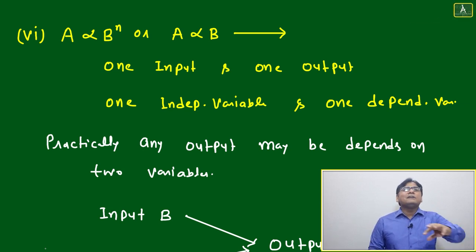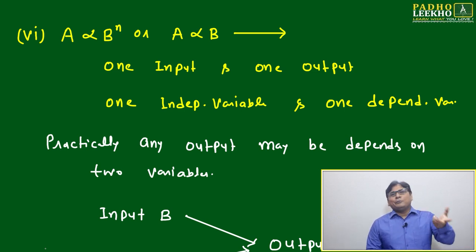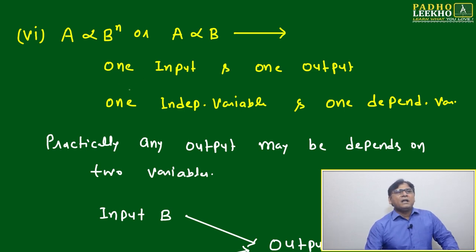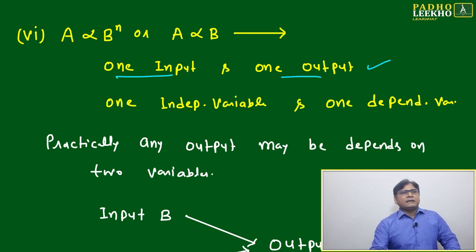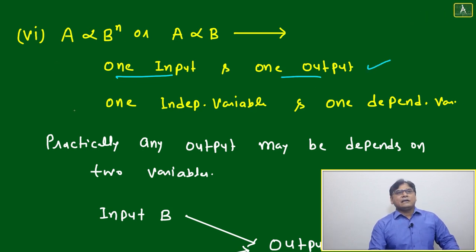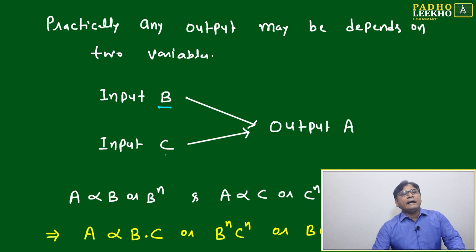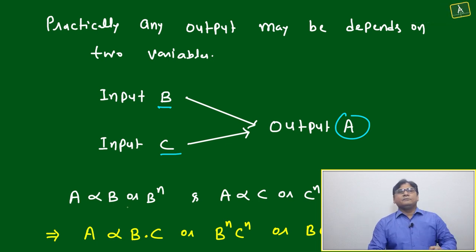Practically, any output will not depend on only one input — it will depend on multiple inputs. So here we extend the idea: with one input and one output, we have seen that a is directly proportional to b to power n. But suppose there are two inputs — input b and input c — giving output a. A variety of situations can arise here.